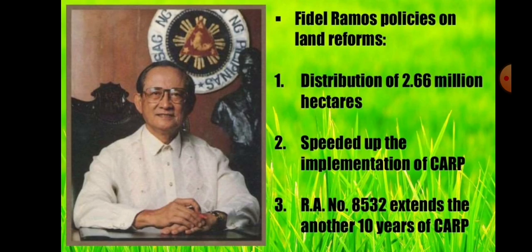Under Fidel Ramos, there was distribution of 2.66 million hectares, which was supposed to speed up the implementation of CARP. RA 8532 extended CARP for another 10 years. However, the question is whether these 2.66 million hectares were actually distributed, because reports suggest the lands were not truly titled in the farmers' names and could be reclaimed anytime by private landowners or the government.